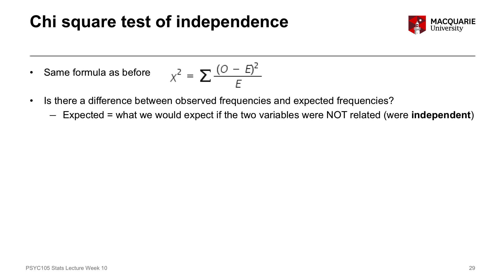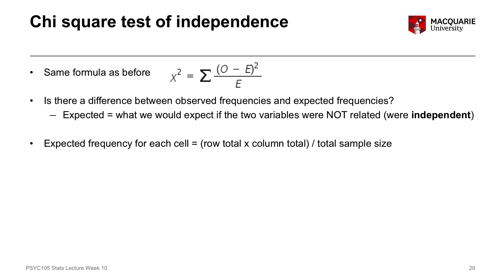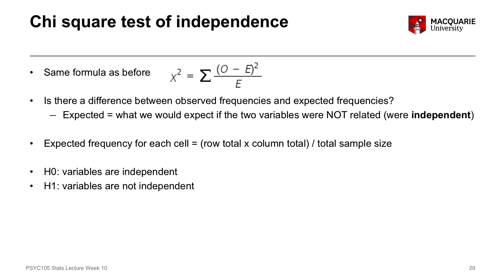That's our null hypothesis — that there's no relationship between the variables, that the variables are independent. The null hypothesis here is that our two variables are independent, that there's no relationship between them. And our alternate hypothesis is that the variables are not independent, that there is a relationship between them.